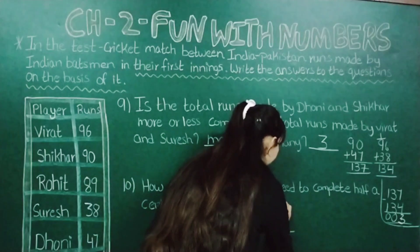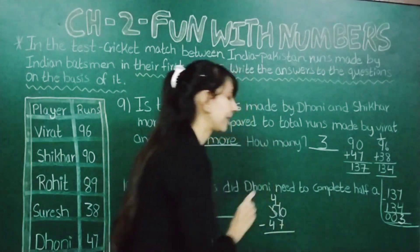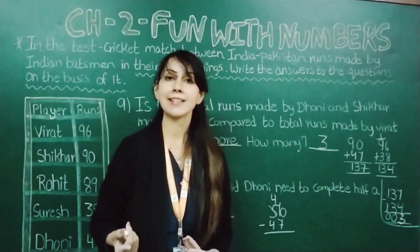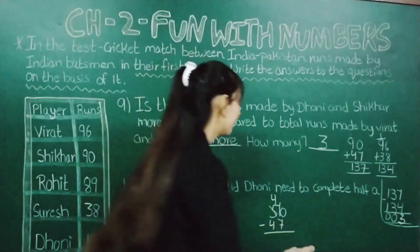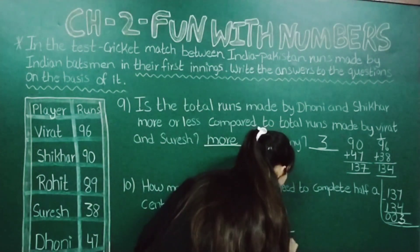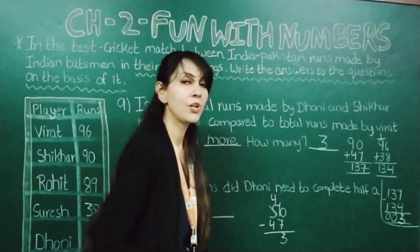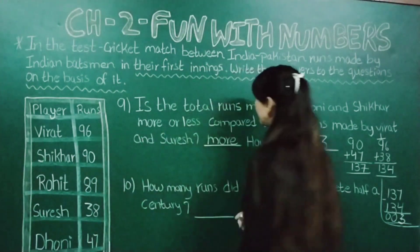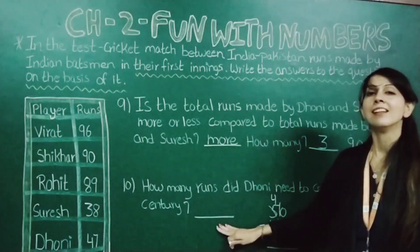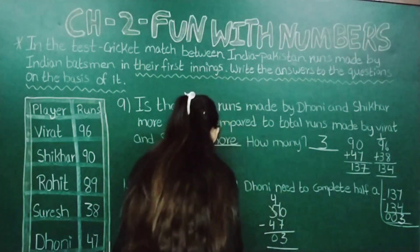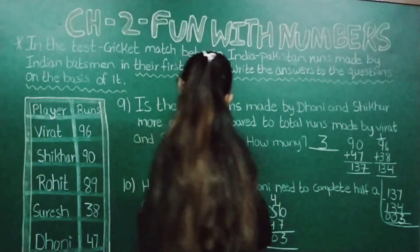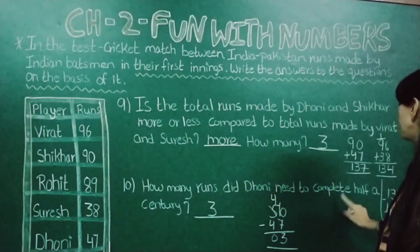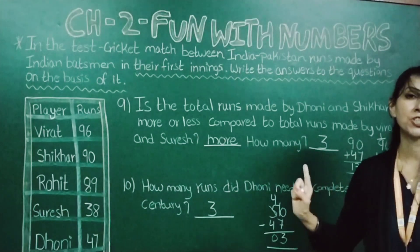Make it 4 and this becomes 10. Now 10 minus 7 gives 3. So here it will come 3. And 4 minus 4 gives 0. So you got the answer: 3. So you can say 3 runs Dhoni needs to complete half a century.